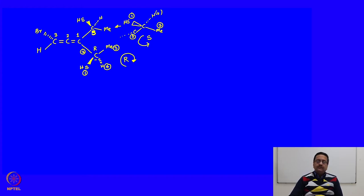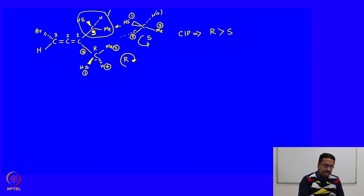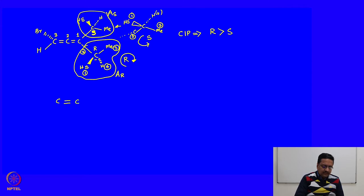Now we need to know whether R or S gets priority when they are compared among themselves. According to CIP nomenclature rule, R gets priority over S. Let us assume the name of this group as A. The group with S configuration is A. So if we draw the molecule now without drawing the large groups as they are, we write A S and A R, and draw the other two atoms on carbon 3 as above and below the plane.